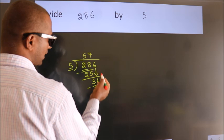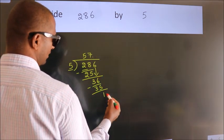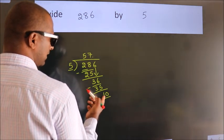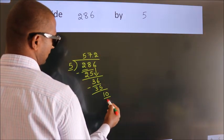no more numbers to bring down. So what we do is, we put a dot and take 0. So, 10. When do we get 10? In the 5 table. 5 times 2 equals 10.